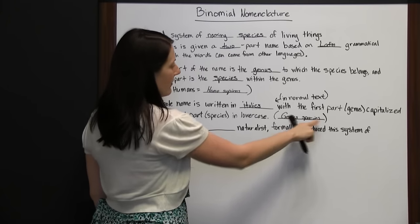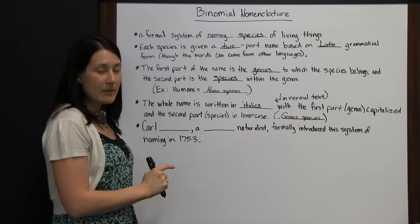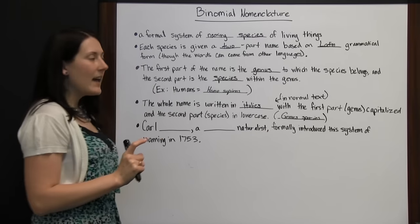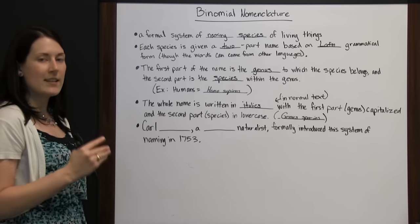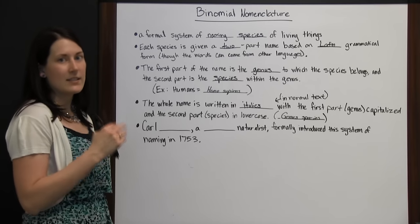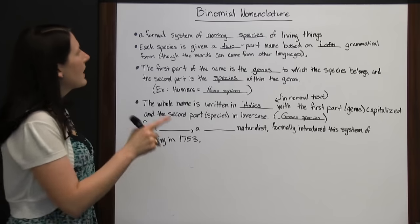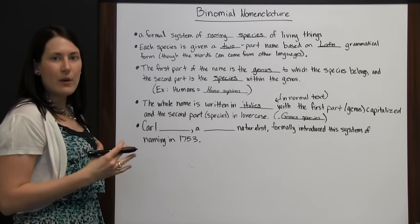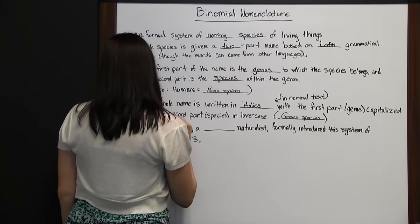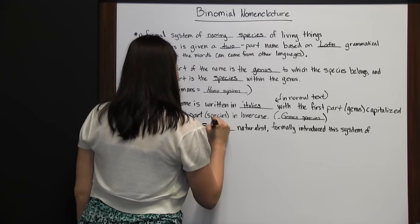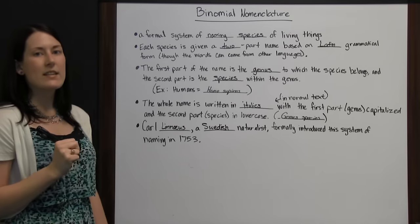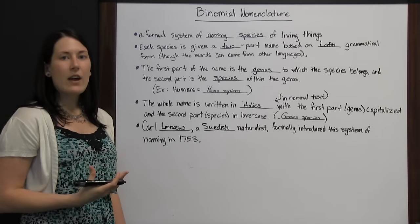So you can see: the genus will be capitalized, the species will be lowercase, and the whole thing will be in italics — unless the sentence or paragraph is already in italics. This two-part naming system was thought up by Carl Linnaeus, a Swedish naturalist, who formally introduced it in 1753, and it's been around ever since.